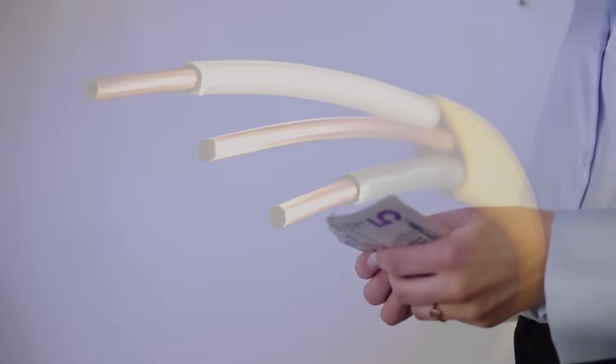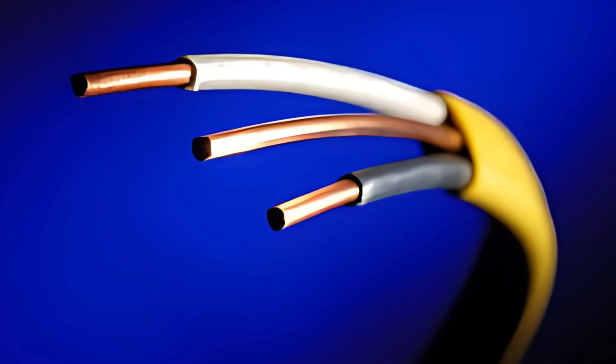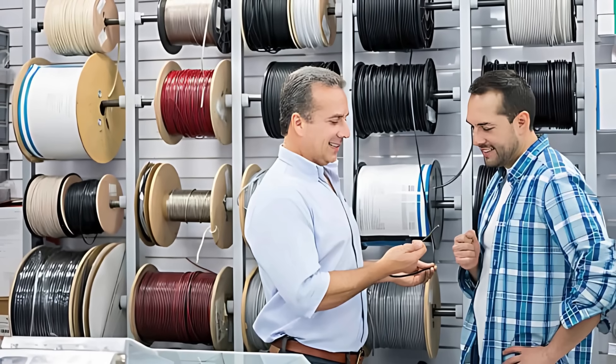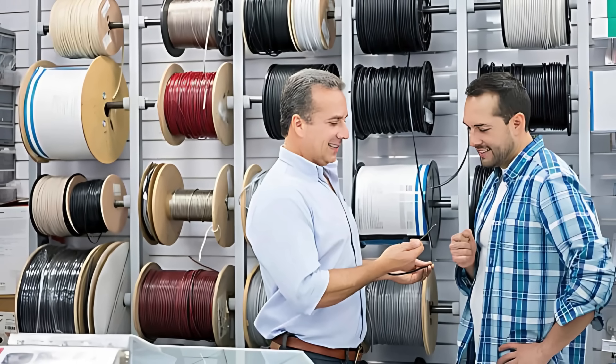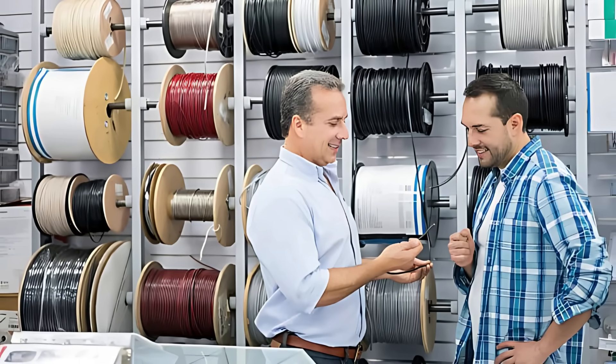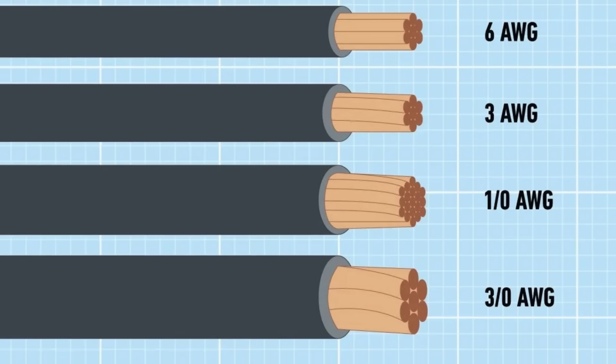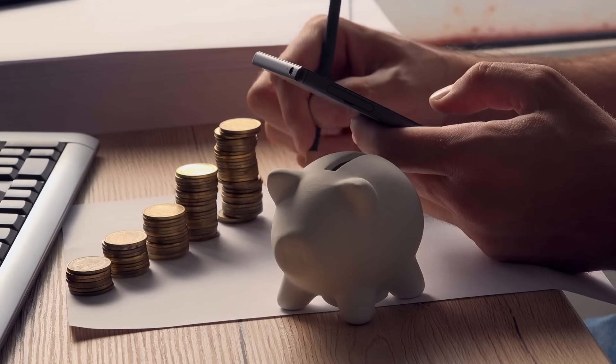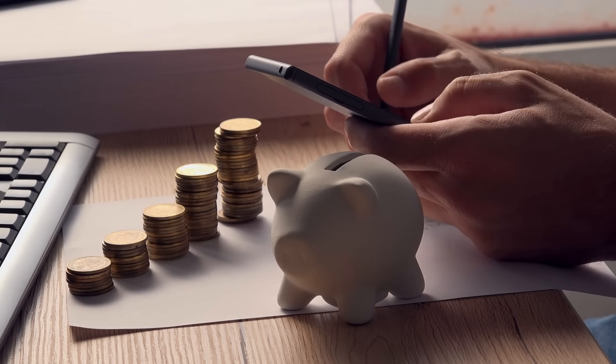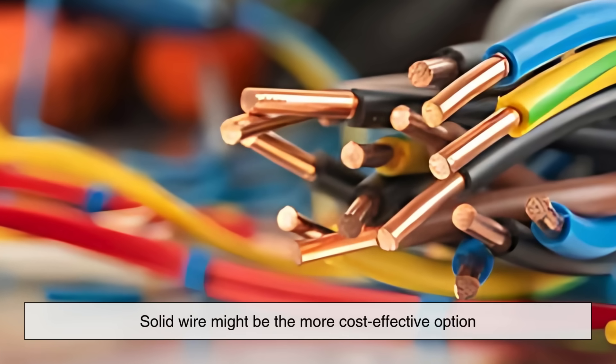As far as cost goes, solid wire usually wins. It's cheaper to manufacture and that savings typically gets passed on to the consumer. Stranded wire tends to be more expensive, especially in larger gauges, simply because more processing is involved in its production. So if budget is a concern and your project allows for it, solid wire might be the more cost effective option.